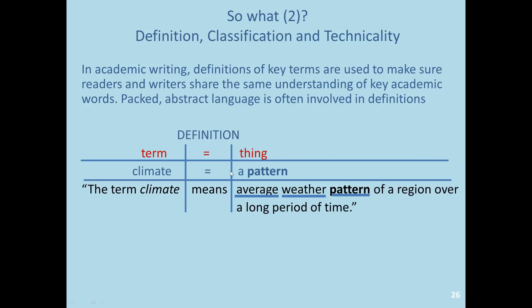But this is not just any pattern. Climate means an average weather pattern. Weather classifies the kind of pattern, and average classifies the kind of weather pattern. So this is not just a description of a pattern — it's not a good or bad pattern — but is a classification of the type of pattern. Classifying things like 'pattern' and classifying adjectives like 'weather' and 'average' tell us how the world is analyzed in academic communication.